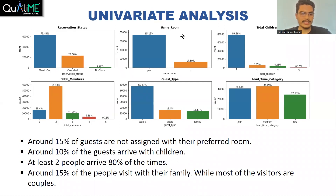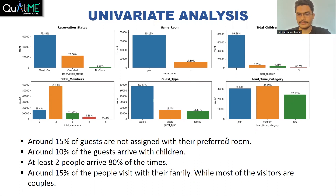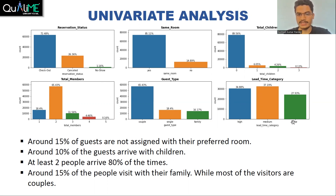Around 15% of guests are not assigned their preferred room. Most of the time people are assigned their preferred room, but approximately 15% are not. Around 10% of guests arrive with children; around 90% do not arrive with any child. At least two people arrive more than 80% of the time. Most guests are couples, and there is almost equal distribution among low, medium, and high lead time categories.